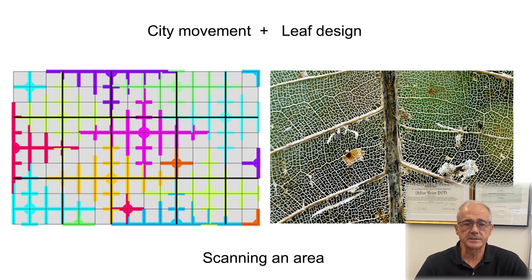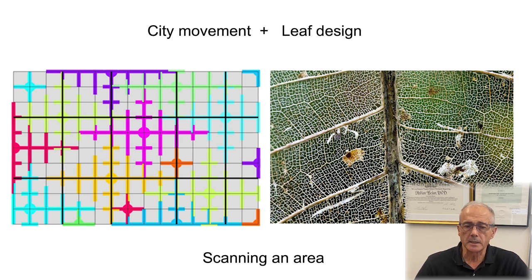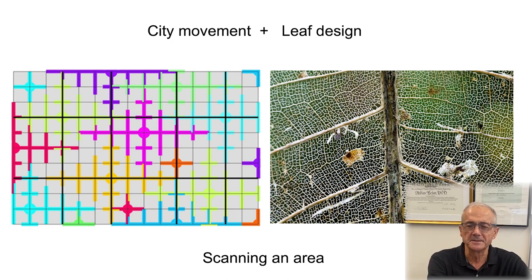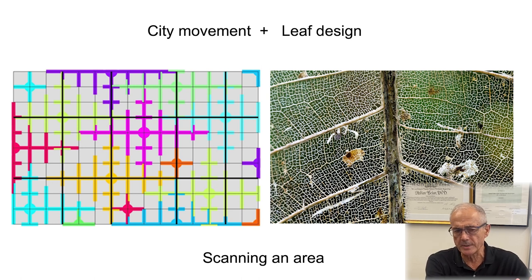The city grid is not the configuration in which people move through the city. The human population flows in the dendritic pattern shown in colors. The city grid is the cheapest, simplest set of channels that facilitate not only dendritic flow but the superposition of many such flows on the same area. These images are all about things that flow, things that change.